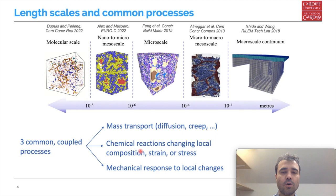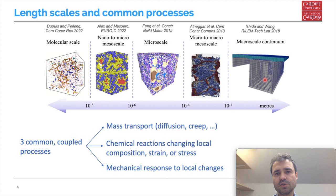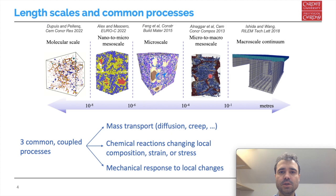The first part of this talk will look at how the three processes — mass transport, chemical reactions, and mechanical response — are modeled at each specific length scale across five representative scales. The macro-scale continuum is where we model concrete as a continuous porous medium. If we zoom in at the centimeter level, we start resolving individual aggregates and interfacial zones, while the cement matrix is still seen as a continuous porous medium, and we can also resolve explicit cracks. Zooming further to the microscale at hundreds of micrometers, we can resolve the individual phases composing the cement paste as well as the capillary pores.